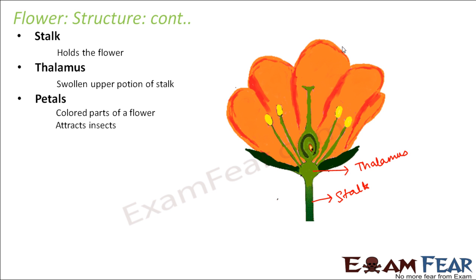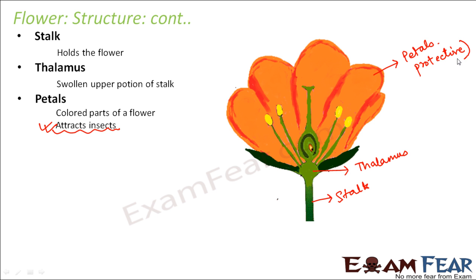Next are the petals, which are the colored parts of the flower. Their main job is to attract insects. Insects play a very important role in the process of sexual reproduction, so it is very important that insects come to the flowers. The colorful appearance of the petals attracts insects — petals could be red, green, white, blue, any color. Petals are also quite big compared to the internal structures, which helps to protect the reproductive organs present inside. So petals provide both attraction and protection to the internal reproductive organs.